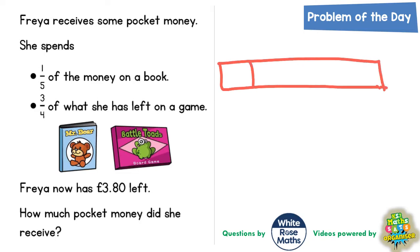So we draw five pieces: one, two, three, four, five. Now she spends a fifth of the money on a book, so over the top of that first fifth we'll write the word 'book' and we will scribble it out because she has spent it.